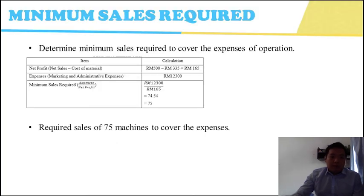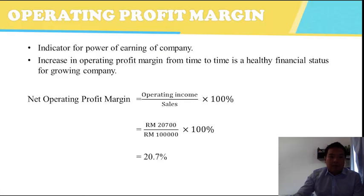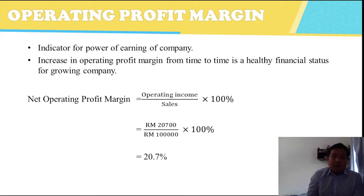The minimum sales required is to determine the minimum sales needed to overcome the expenses. The net profit per product is RM165 and the expenses of operation are RM12,300, so we need to sell 75 units to overcome the expenses. The operating profit margin is an indicator of a company's earning power. Our net operating profit margin is 20.7%.